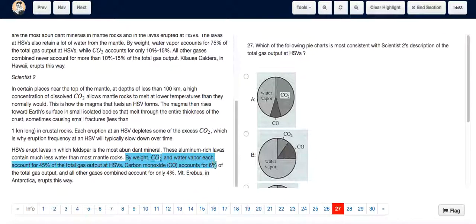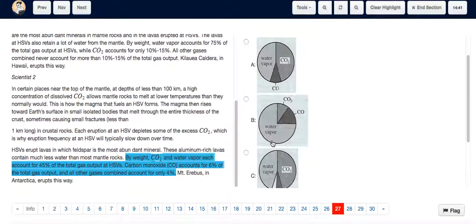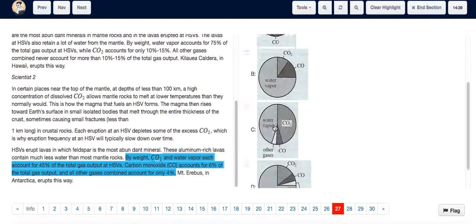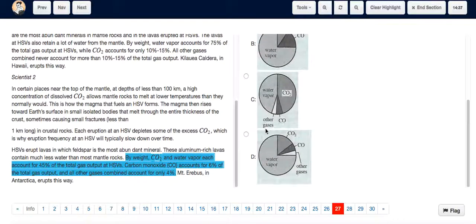Carbon monoxide accounts for 6%, and all other gases combined account for only 4%. So that means there are four parts to this: carbon dioxide, water vapor, carbon monoxide, and other gases. So it can't be A or B because they have no representation of other gases. It's definitely either C or D.